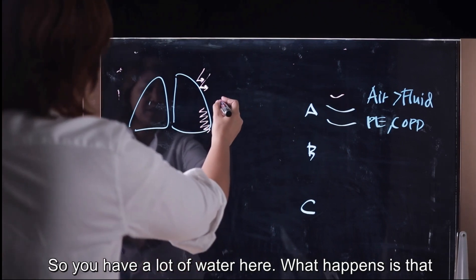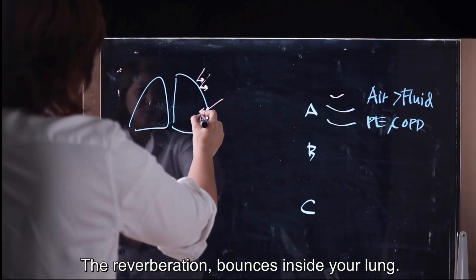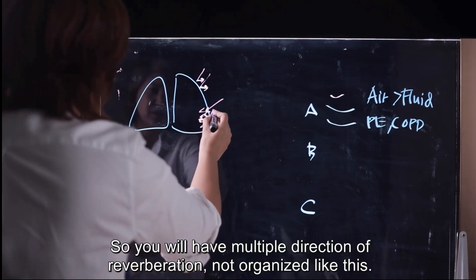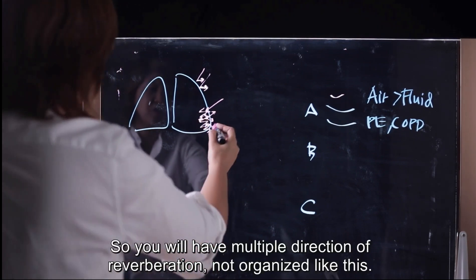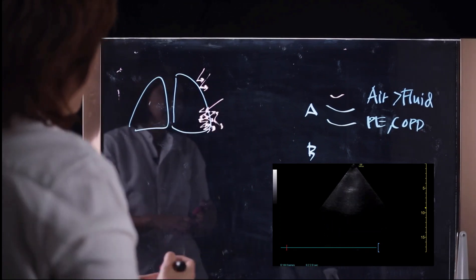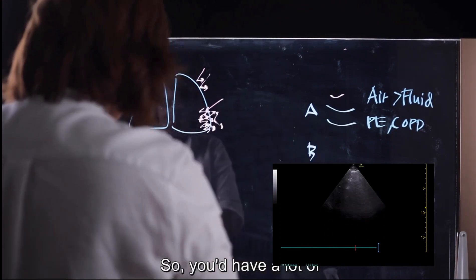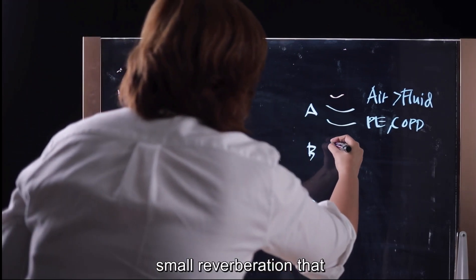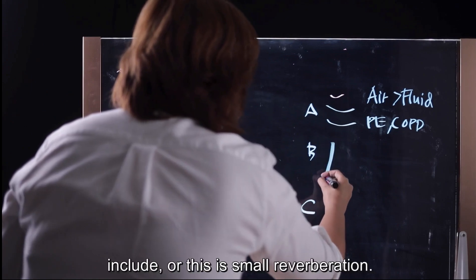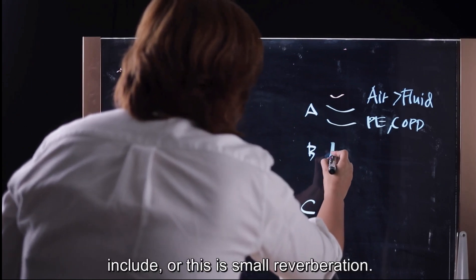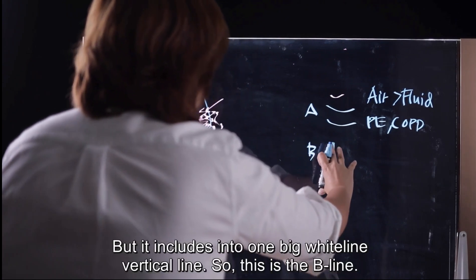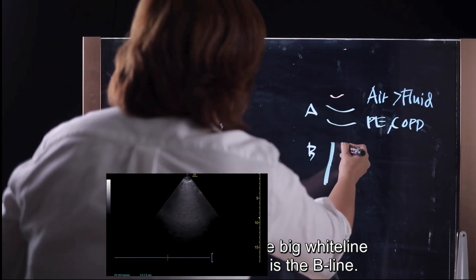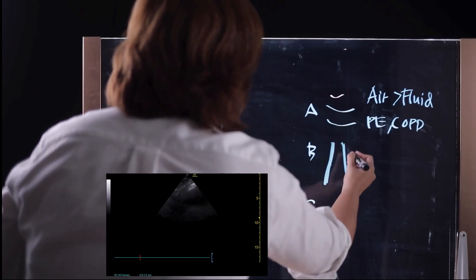What happens is that the reverberation would bounce inside of alveoli. So you would have multiple direction reverberation. It would not be organized like this. So you would have a lot of small reverberation that include into one big white vertical line. So this is B-line here.